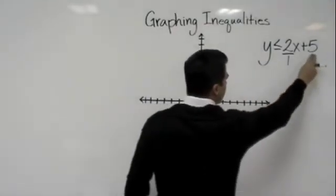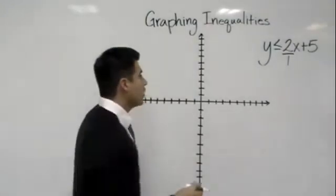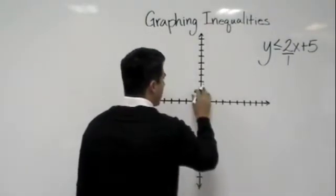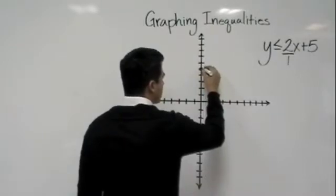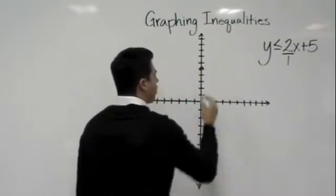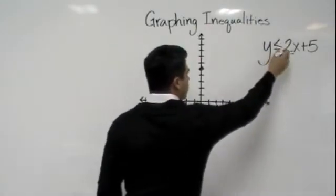Okay, we start at our y-intercept. I call our y-intercept our starting point. We know that it's going to start on 5 on the y-axis. So I'll go ahead and put a point right there. Then our slope tells us we go rise over run, which means we go up 2 and we run to the right one time.